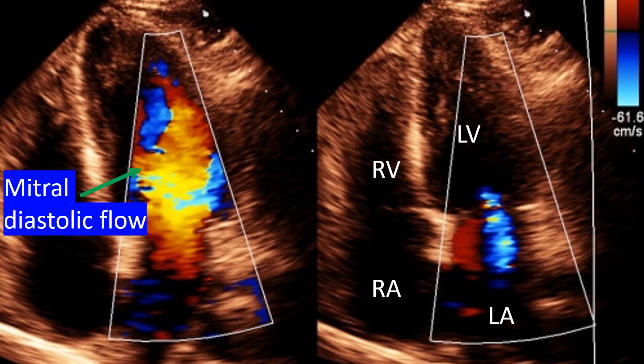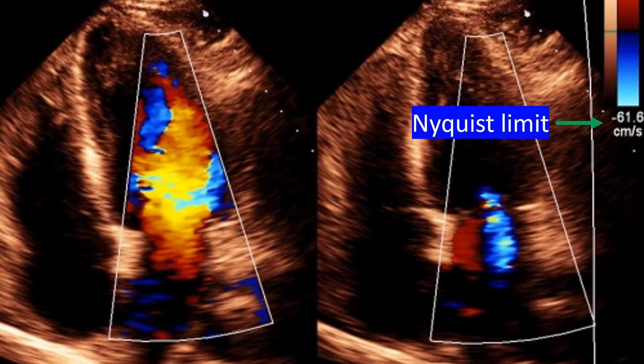Color Doppler of mitral flow on echocardiography with color flow mapping from the apical four-chamber view. The initial frame is in diastole when the mitral valve is open and there is forward flow from the left atrium to the left ventricle. The flow is predominantly reddish, though there is an area of variance in the middle with yellowish and greenish color.